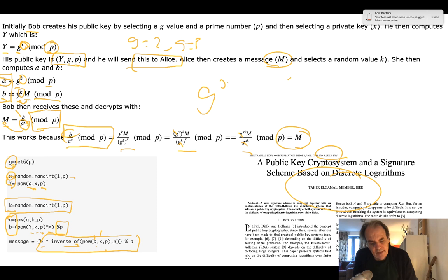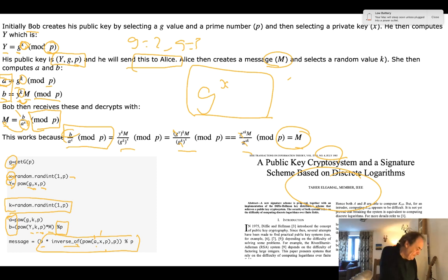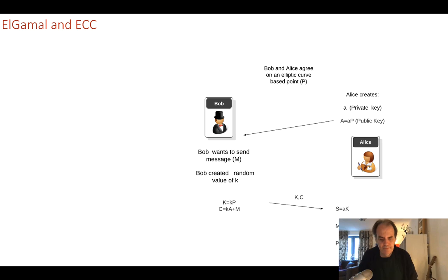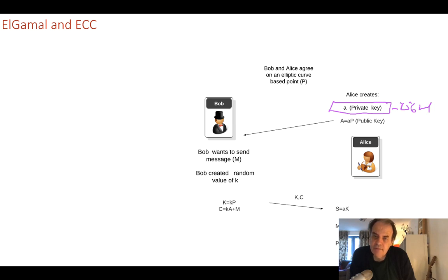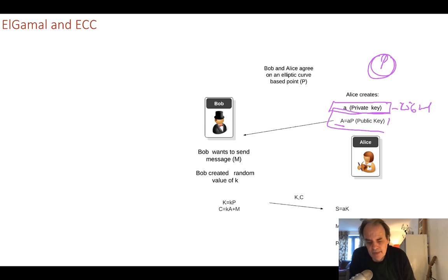There is a better way to implement this using elliptic curve cryptography rather than discrete logarithms. Alice creates her private key A as a scalar value — typically 256 bits — and a random number. We then take a base point P on the elliptic curve and calculate her public key as A times P. This gives a point on the elliptic curve which becomes her public key, and she sends it over.